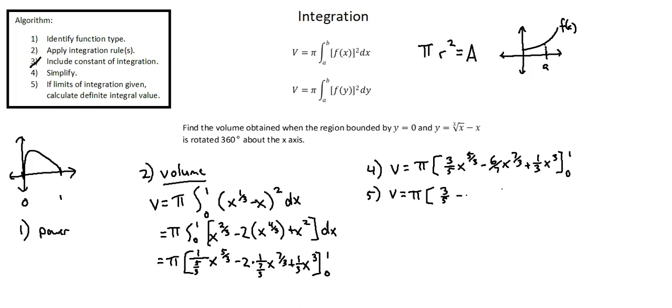Minus x becomes one to the power of seven thirds is one. Times six over seven is six over seven. And finally, plus x becomes one to the power of three is one. Times one over three is one third.